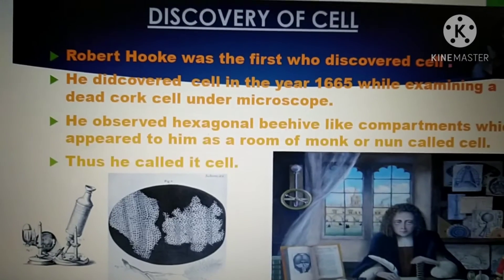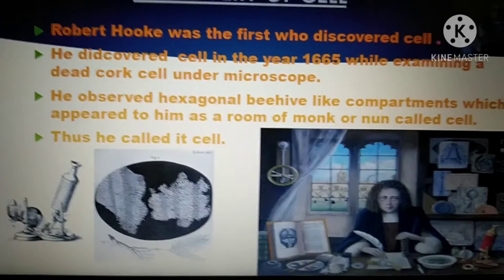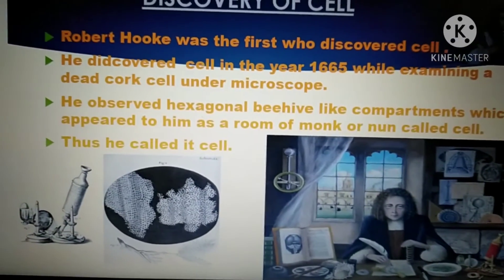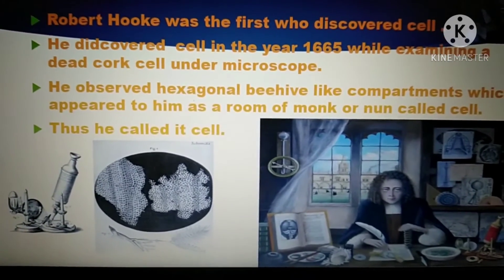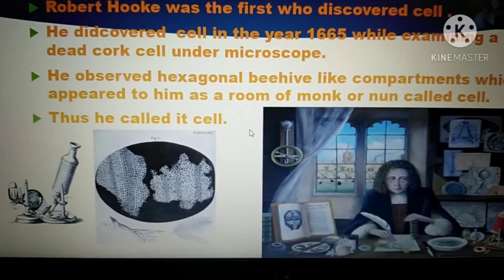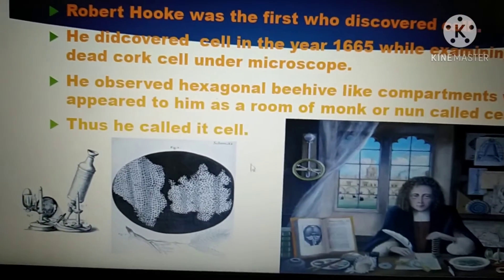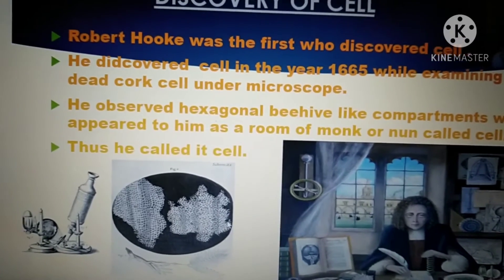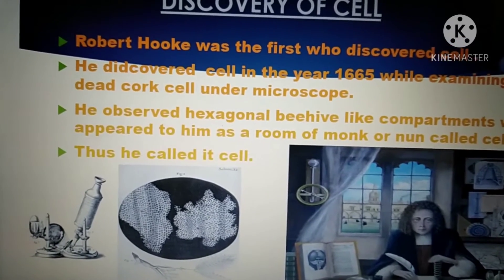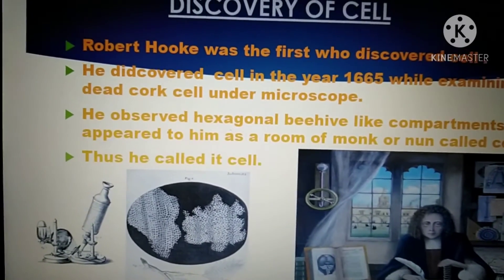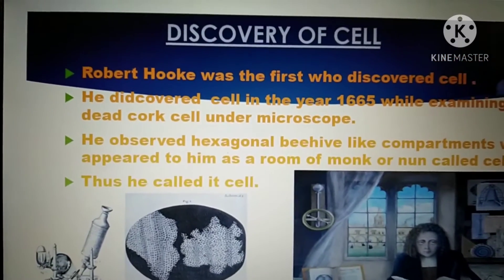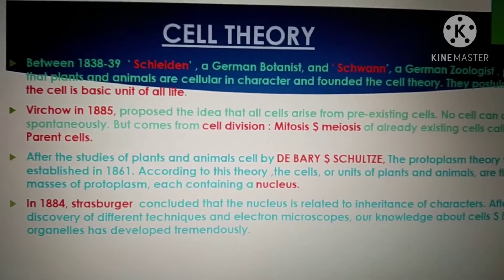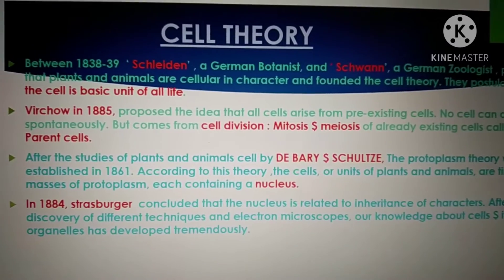Robert Hooke recorded all his observations in detail in his book Micrographia. What he observed was a dead cork cell — cork being a plant cell from an oak tree. Now let's proceed to cell theory, which was developed between 1838 and 1839.